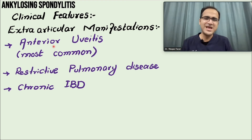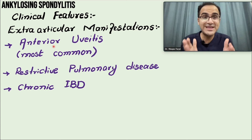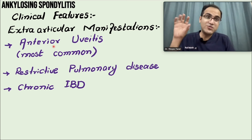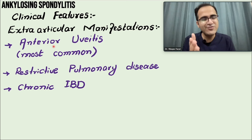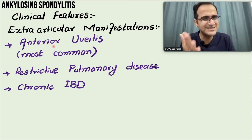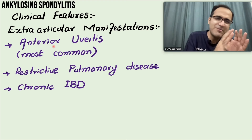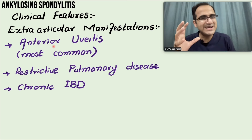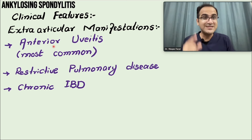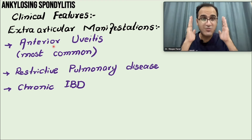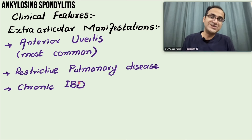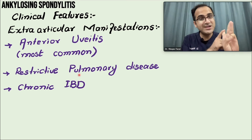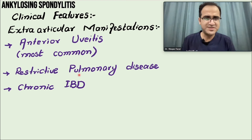Another high-yield exam association is aortic regurgitation. A young man with aortic regurg and back pain or tenderness over the sacroiliac joint strongly suggests ankylosing spondylitis. Restrictive pulmonary disease and chronic inflammatory bowel disease are also associated. The three most important extra-articular associations to remember are: aortic regurgitation, anterior uveitis, and inflammatory bowel disease.